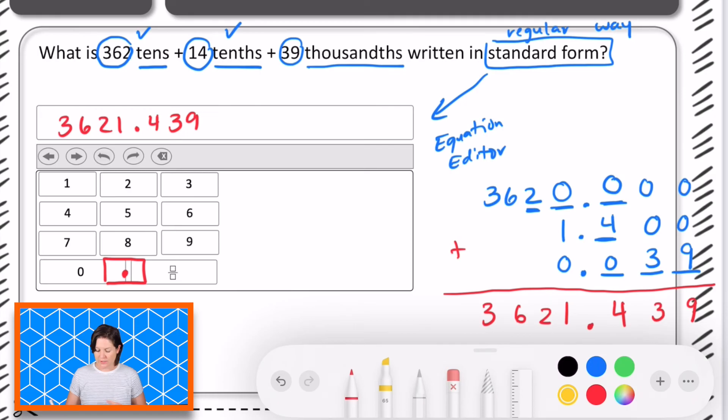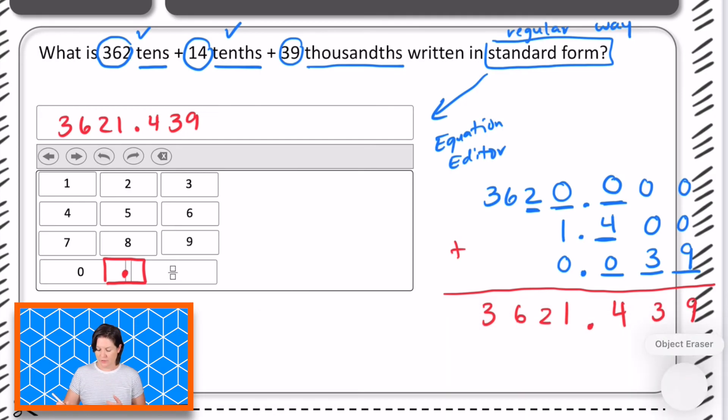So when you're using the equation editor you can either type it in I believe or you can click the digits to create your number. So you click three six two one decimal point four three nine. So again I'll fix that printable for you but that is how you solve this problem of the week.